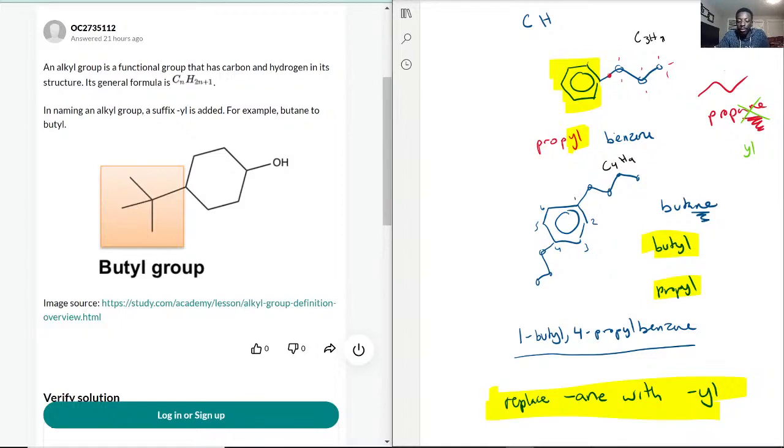Because butane is actually C4H10. So you're kind of taking away the hydrogen and replacing that hydrogen with the main group, and then that becomes the side group, aka the alkyl group in this case.